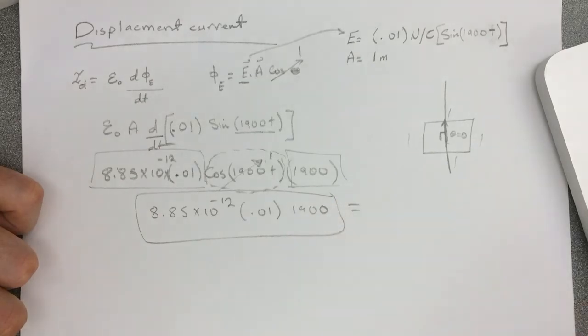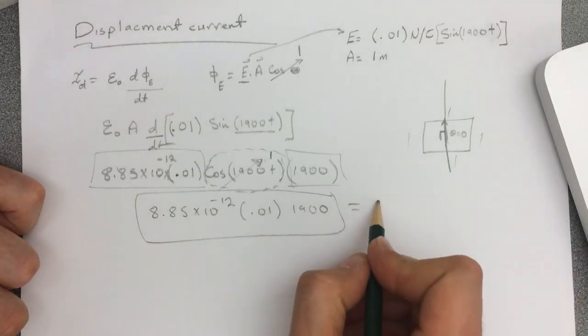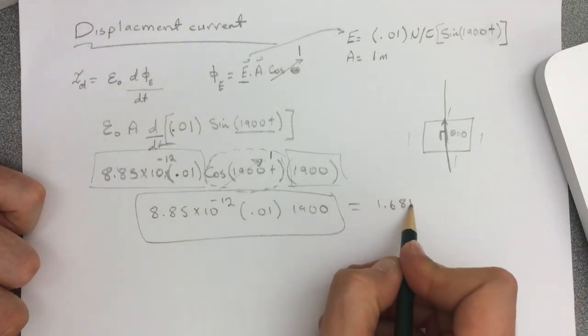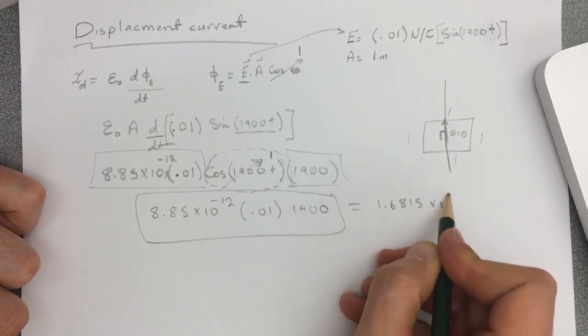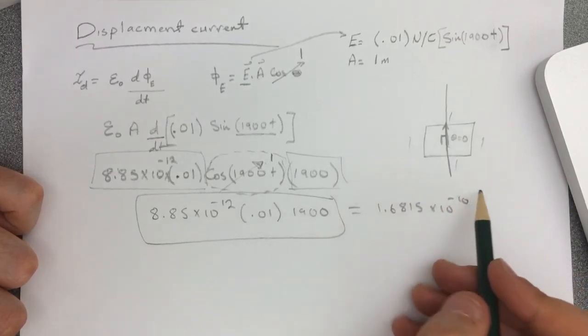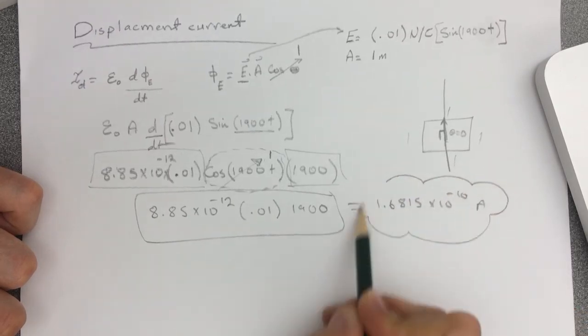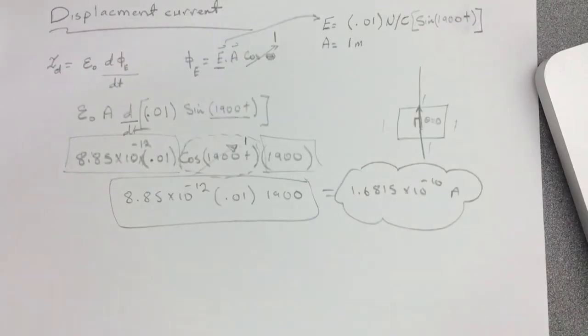My answer for this is 1.6815 times 10 to the negative 10 ampere. Cool, alright. I hope it helped. Good luck.